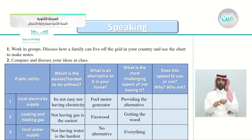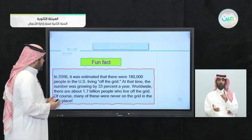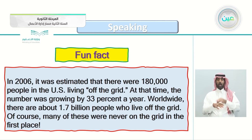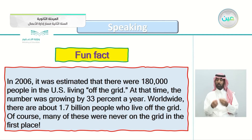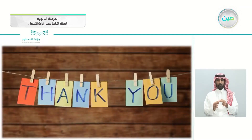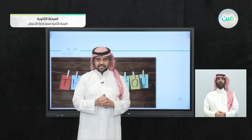Compare and discuss your ideas in class once you fill this chart. Here's a fun fact: in 2006 it was estimated there were 180,000 people in the US living off the grid, and that number was growing by 33% a year. Worldwide, there are about 1.7 billion people who live off the grid — of course, many were never on the grid in the first place. With that we reach the end of this lesson. See you next lesson, inshallah. Subhanaka Allahumma wa bihamdak, assalamu alaykum.